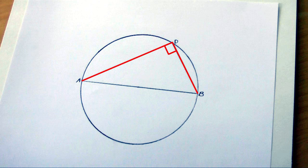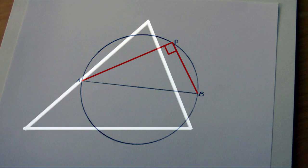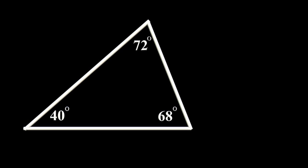We must start with two truths. Truth one: add the three interior angles of a triangle, and the sum is 180.